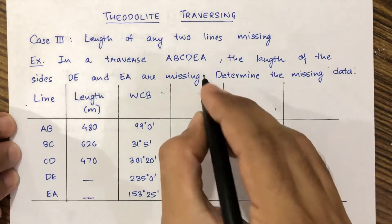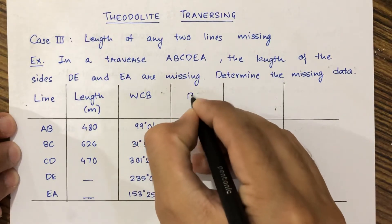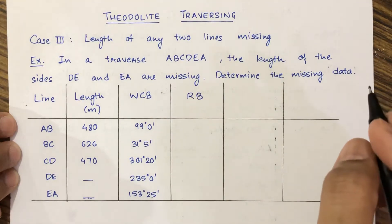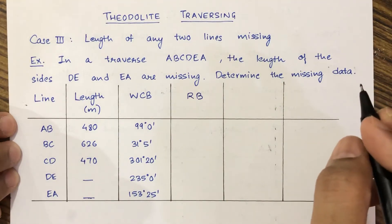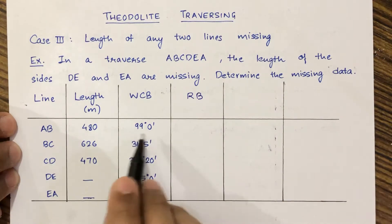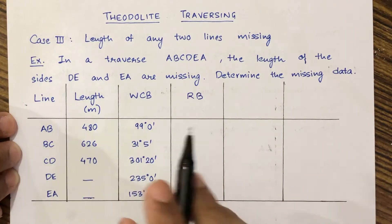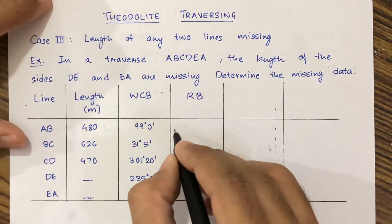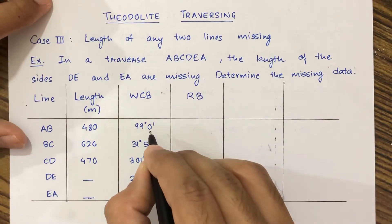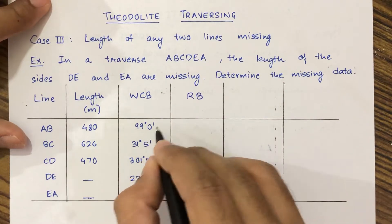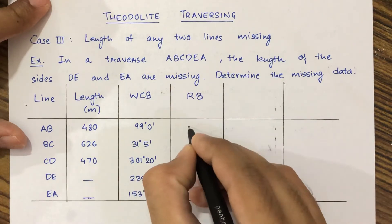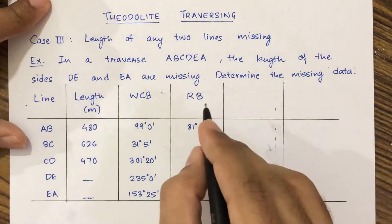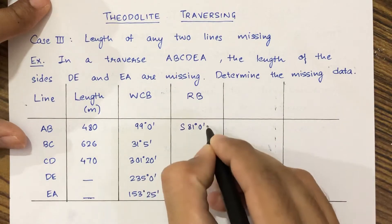First we need to convert the whole circle bearing to reduced bearing. The whole circle bearing is 99 degrees, which is in the second quadrant. So we subtract 99 from 180, which gives us 81 degrees 0 minutes, and it will be in the second quadrant, that is south east.